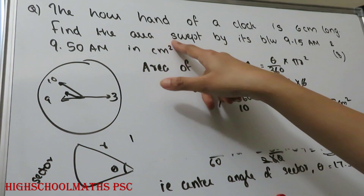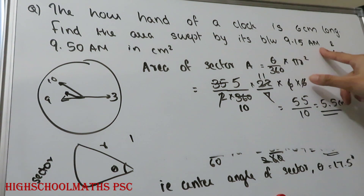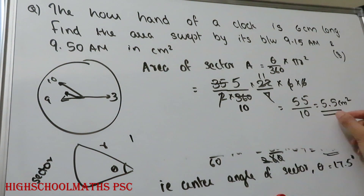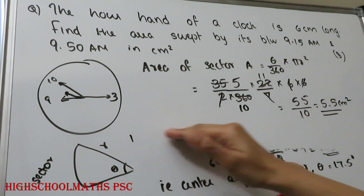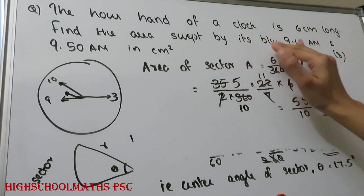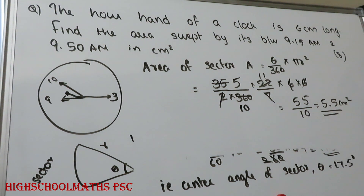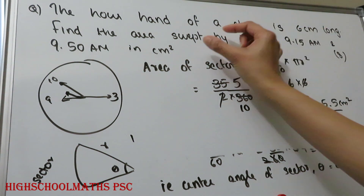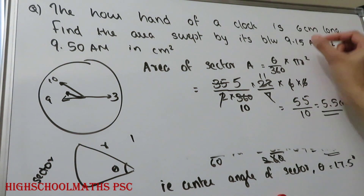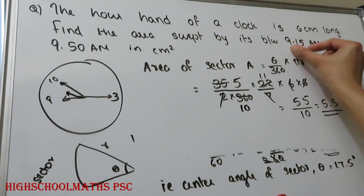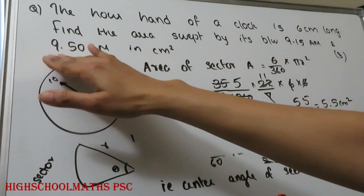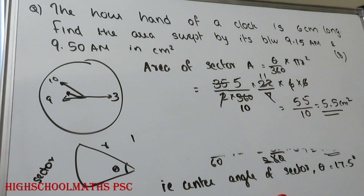The area swept by the hour hand between 9:15 am and 9:50 am is 5.5 cm². This is the area of the sector, where the radius is the length of the hour hand, θ is the central angle determined by the time difference, and the hour hand rotates 30 degrees per hour. This is an easy question type.